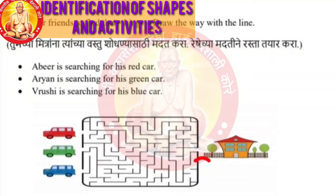Now, tumhi chya mitra na tencha vastu shodhnyaa sahti madad kara — help your friends find their objects. Draw the way with the line. Abir is searching for a red car — Abir la lal rangacha gaadit basayache ahe. Aryan is searching for a green car. Vrushi is searching for a blue car. Pencil ghya ani tia tia rangacha kaar paryant raastha banwa.